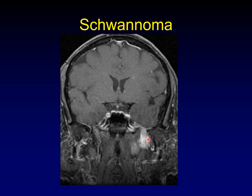Here's an example of a schwannoma along V3. We discussed how you can distinguish vasa nervosa from perineural spread by seeing the center line of preserved non-enhancing nerve. But if you've got a schwannoma expanding the nerve, you don't get that sign. Here it really looks like the entire nerve is involved — because it is — along with some surrounding structures. So this looks just like perineural spread, but is in fact a benign neoplasm.